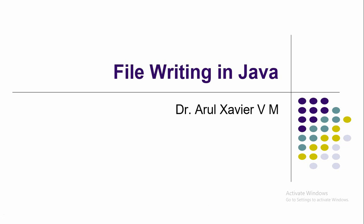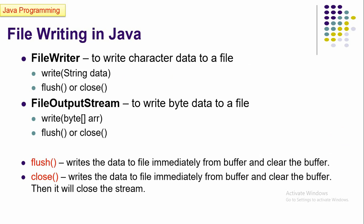In this video we will discuss how to write data in a file using Java programming language. In Java, we have the java.io package — the input and output stream package. There are two types of stream classes: character-oriented and byte-oriented. We can write data to a file in two ways: one is using FileWriter, and another is using FileOutputStream.